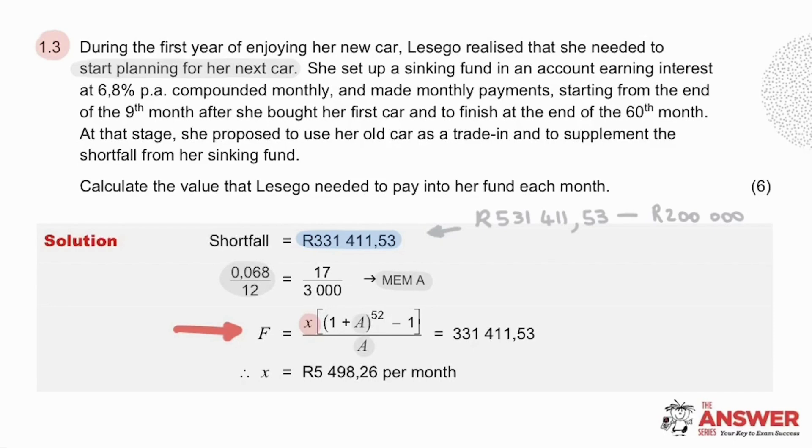And then if we look to the question for information on how many months she wants to make payments for, it is up until the 60th month, but only starting at the end of the 9th month. So there are no payments for the first 8 months, which means she will make 52 payments altogether. The solution for X tells us that Lesego needs to pay R5498.26 into her fund each month in order to cater for this shortfall.